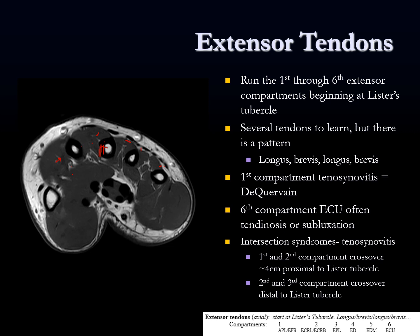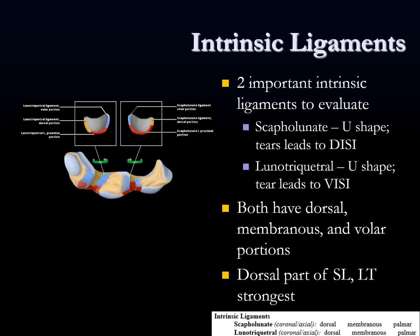There are intersection syndromes where those compartments cross over at those points, so you can look for fluid or tenosynovitis in those tendons. Then we can go to the intrinsic ligaments of the wrist. There are two important ones to evaluate: the scapholunate and lunotriquetral ligaments. There are small ligaments between all the carpal bones, but those are the two that you need to know about.